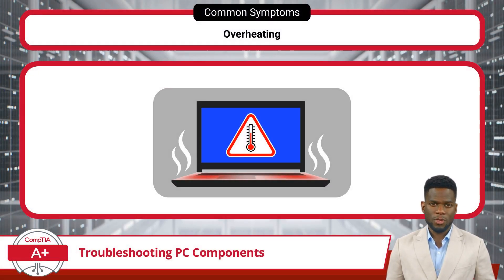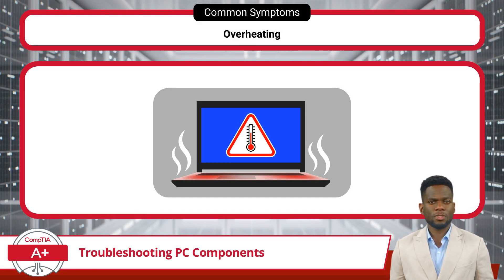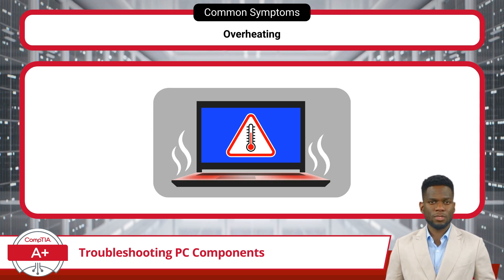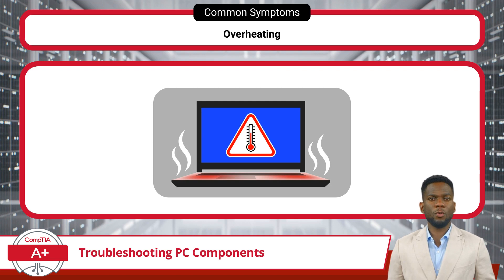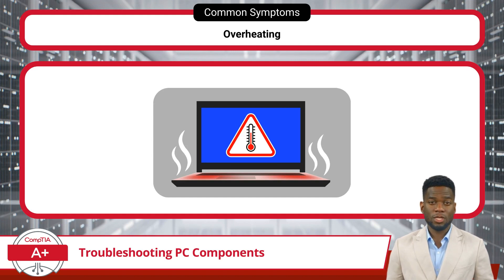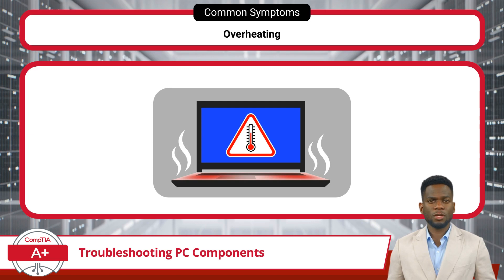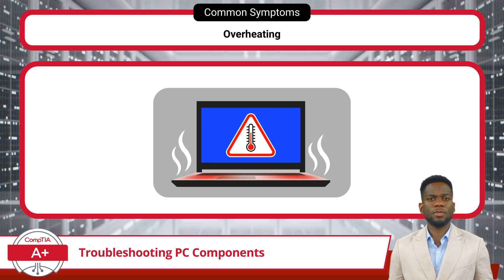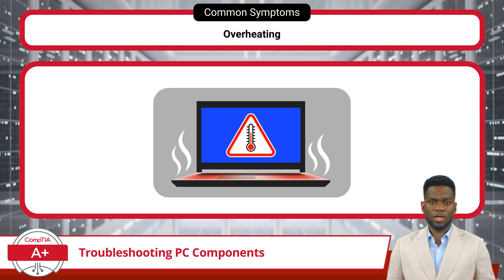Overheating is another threat to the stability and performance of computer systems. One primary consequence is system instability, wherein the computer may exhibit erratic behavior, unexpected shutdowns, or even hardware damage. Several factors contribute to overheating, including inadequate cooling mechanisms, insufficient airflow within the computer case, and poorly designed cooling systems, all of which can exacerbate heat buildup. Additionally, accumulation of dust and debris on internal components can impede heat dissipation. Another common cause is a malfunctioning fan — if a fan fails to operate at optimal speeds or stops working, the device can quickly reach dangerously high temperatures.